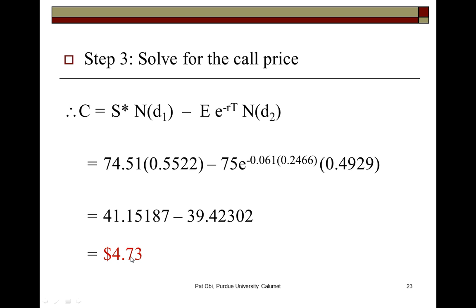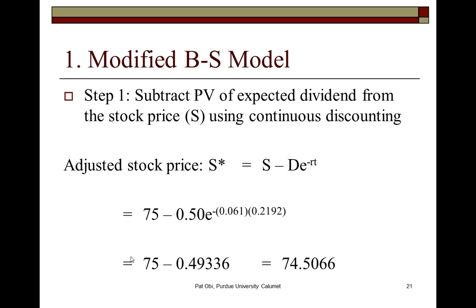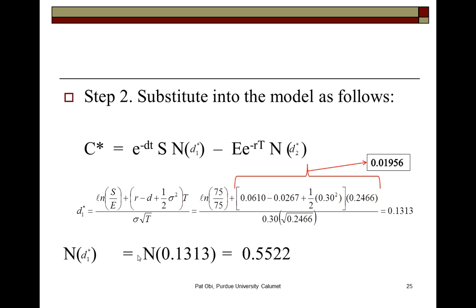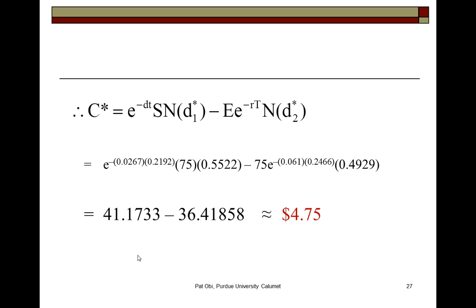The modified Black-Scholes model relies on the adjusted stock price S*. In the modified Black-Scholes model, we calculated the call price to be $4.73. In the Merton model, we calculate it to be approximately the same — here it's $4.75.